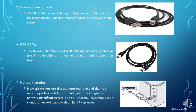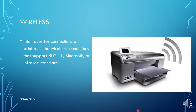IEEE FireWire is not built in on many printers or PCs — it is available for high-end printers and is popular on laptops. The network printer is connected with an RJ45 connector to the Ethernet port, and you can connect your printer directly to a hub, router, or any assigned network identification such as an IP address. Wireless connectivity is mostly supported by Bluetooth, infrared, or 802.11 Wi-Fi.